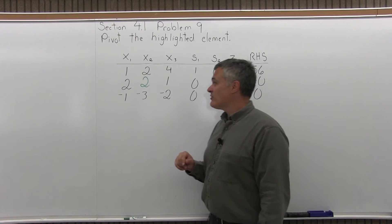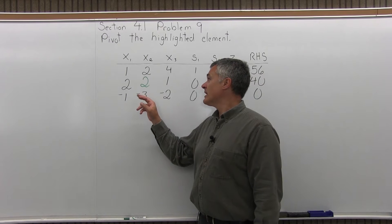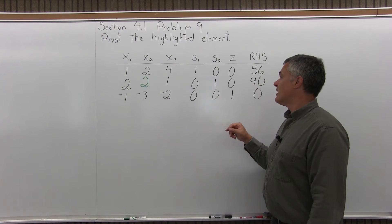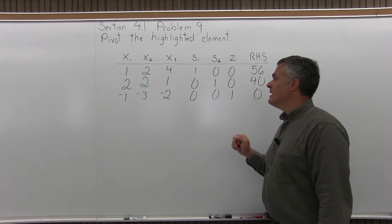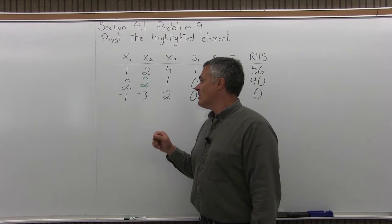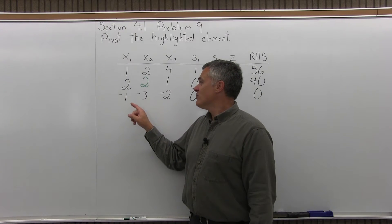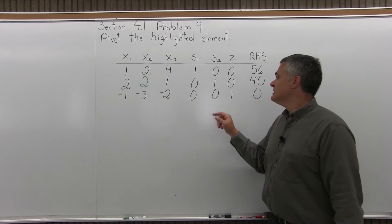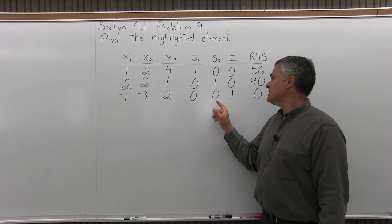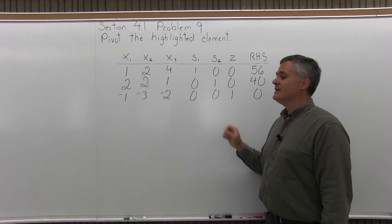The second row is 2, 2, 1, 0, 1, 0, 40. And the bottom row is negative 1, negative 3, negative 2, 0, 0, 1, and 0.